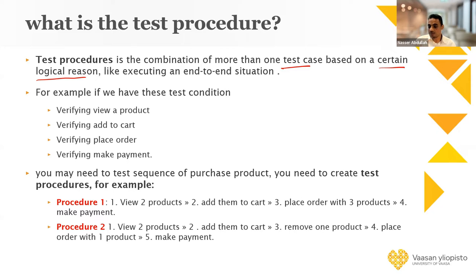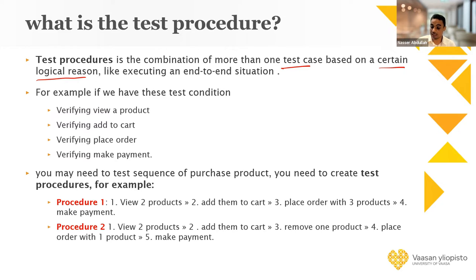In the test suite, we have a combination but without a specific logical sequence reason. For example, if I'm doing unit testing, I have 10 units and I want to test those 10 units. I prepare the test cases for that — this is the test suite. The test procedure, on the other hand, has a logical reason behind creating it.